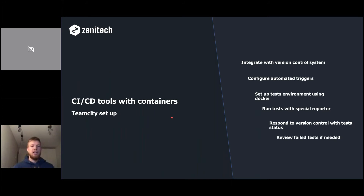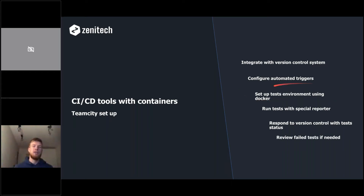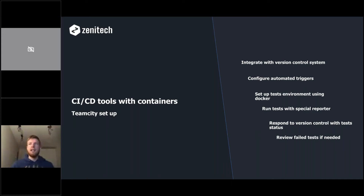For continuous integration and deployment with containers using TeamCity: first I integrate TeamCity with version control, then configure automated triggers so every commit triggers a build that runs my tests. TeamCity sets up the test environment using Docker — the perfect case is reusing my Docker Compose file for tests on TeamCity. It's a must to run tests with a special reporter, and I like TeamCity to report build status back to version control with a green or red flag.